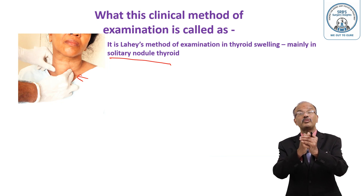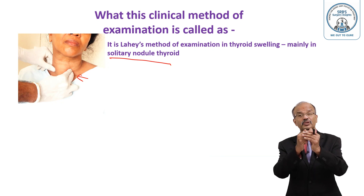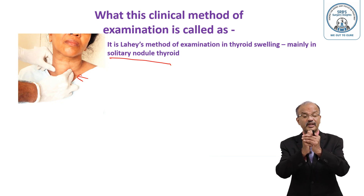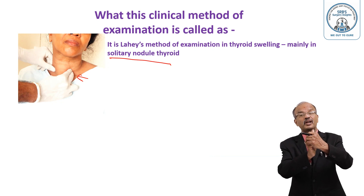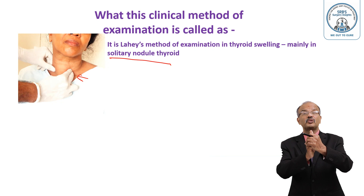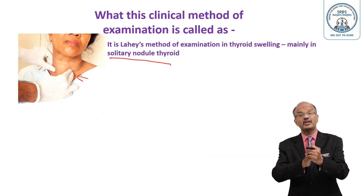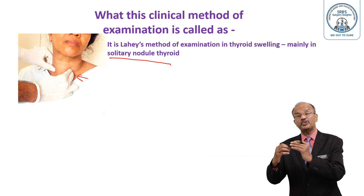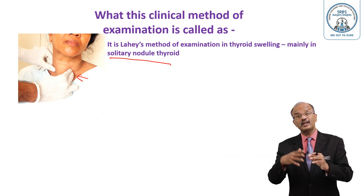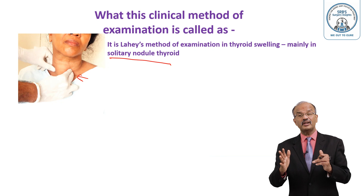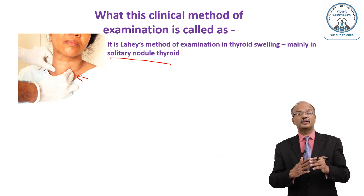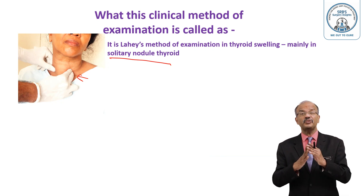Otherwise you won't be able to feel any nodules in the posterior part of the gland. When you push one lateral lobe towards the opposite side, the opposite lateral lobe's posterior part becomes posterolateral, making it amenable to feel for any nodules. Especially in solitary nodule, you do this from the opposite side — and if you're able to feel any nodules, your initial clinical thinking of solitary nodule of thyroid becomes a multinodular goiter. That's why this test is very crucial.